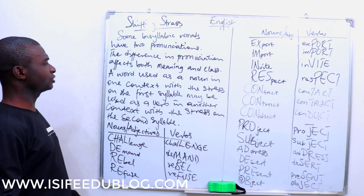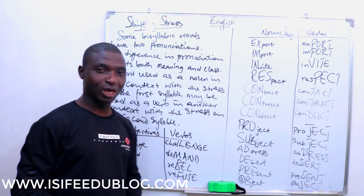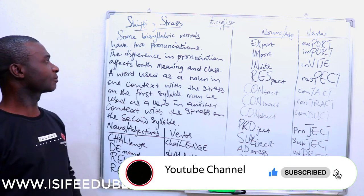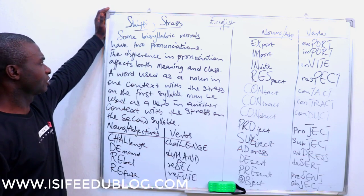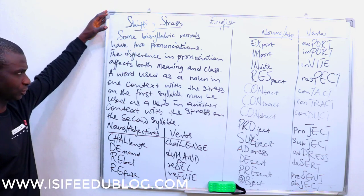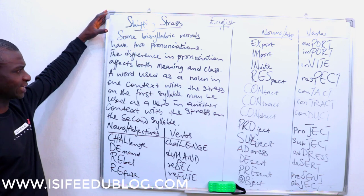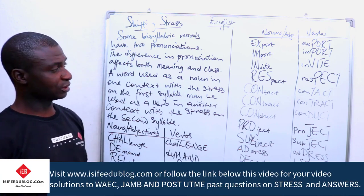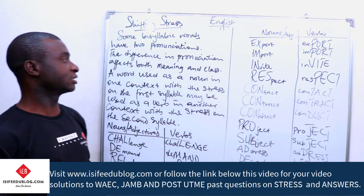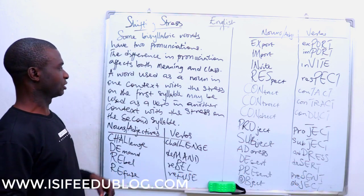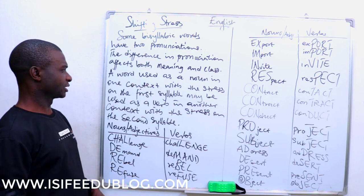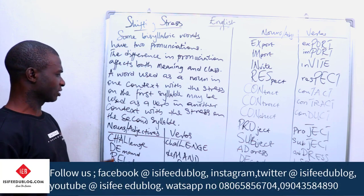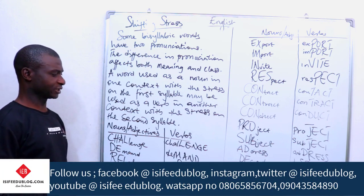In shifting stress, we are looking at how words mean different things by the mere change of their stress pattern. Some bisyllabic words have two pronunciations, and the difference in pronunciation affects both meaning and class. The word used as a noun in one context with stress on the first syllable may be used as a verb in another context with stress on the second syllable.